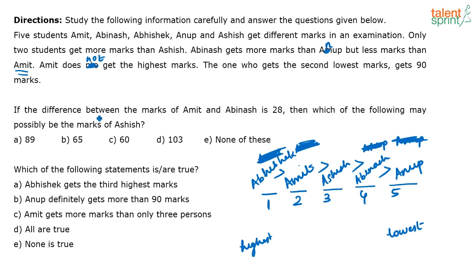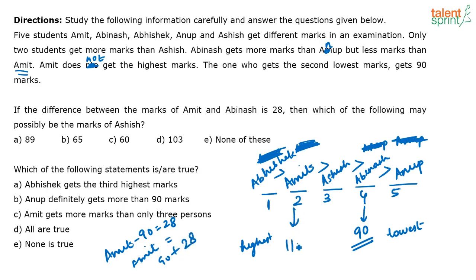If the difference between the marks of Amit and Abhinash is 28, and the person with the second lowest marks gets 90 — that's Abhinash with 90 marks — then Amit's marks minus 90 equals 28, so Amit's marks are 118. Ashish's marks must be between 90 and 118. The only valid option is option D: 103.